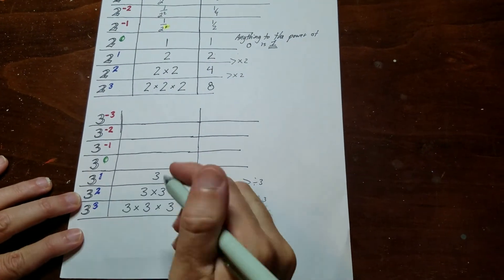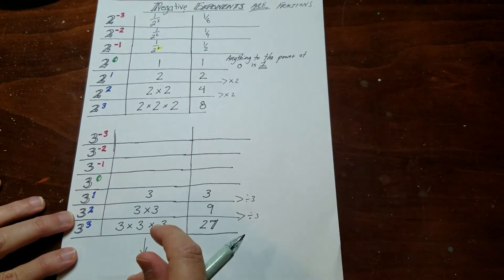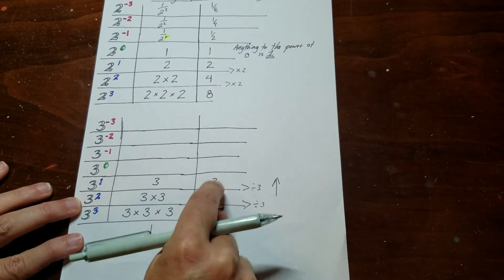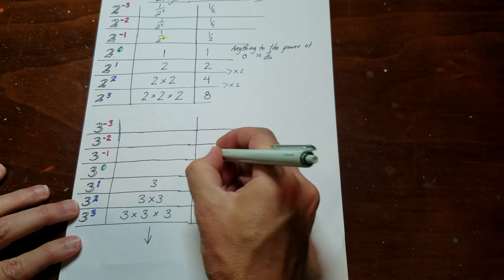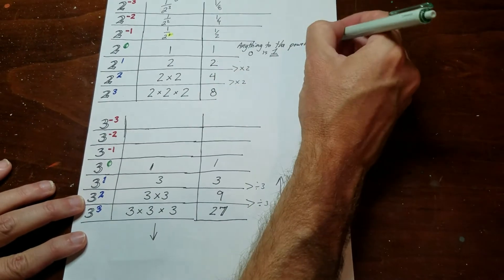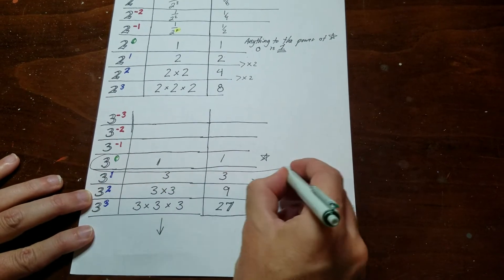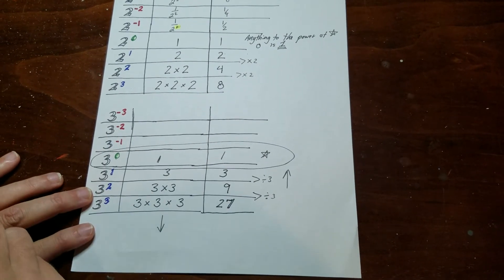we're multiplying by an additional one. So if we want to go up the table, we're actually going to divide. So if I do 3 divided by 3, I get 1. And you can see, again, this rule right here that any number to the power of 0 is actually equal to 1. It's not equal to 0.